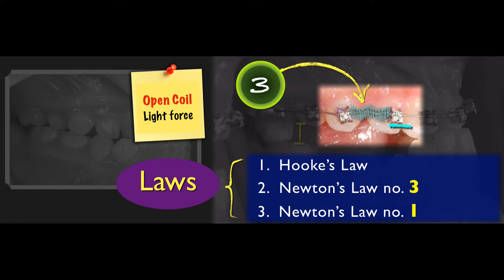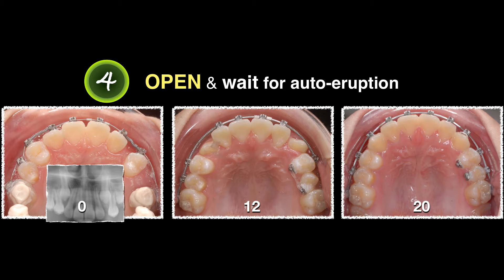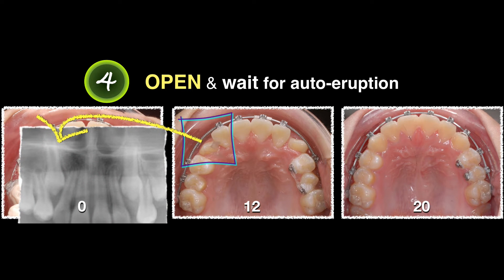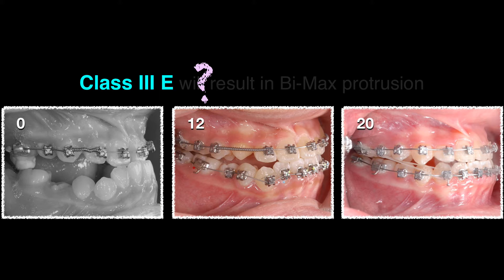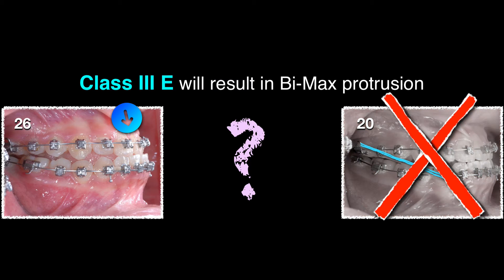Over time, you have to remember Newton's First Law before Newton's Third. Newton's First, Newton's Third — that is all I remember. So I use that: open the space. After you open that space, you allow for auto-eruption. You wait, because in this case, if you look at the canine, it is in a very favorable position. So you open that space and the canine will erupt by itself — almost 100% — no surgery at all. How about Class 3 elastic? If you use Class 3 elastic, you will end up with bimaxillary protrusion.